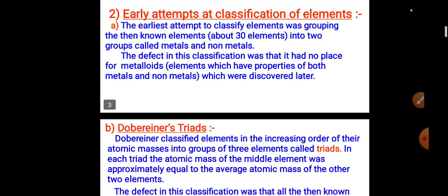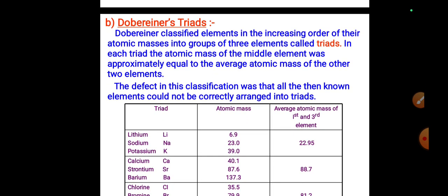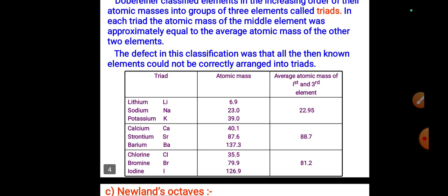The first classification we discuss is Döbereiner's Law of Triads. Döbereiner classified elements in increasing order of their atomic masses into groups of three elements called triads. In each triad, the atomic mass of the middle element was approximately equal to the average atomic mass of the other two elements. The defect was that all known elements could not be correctly arranged into triads.